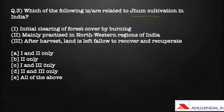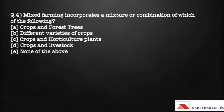Another impact on the environment is pollution — the ash may go to groundwater and pollute nearby rivers or water, and burning also creates high air pollution. Reading the statements: number one — initial clearing of forest cover by burning — is true. Number two — mainly practiced in the north western region of India — is wrong, it is the northeastern region. Number three — after harvest, land is left fallow to recover — is also true. So the answer is one and three only.